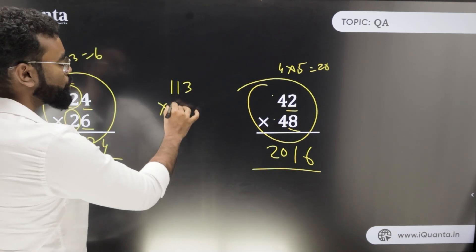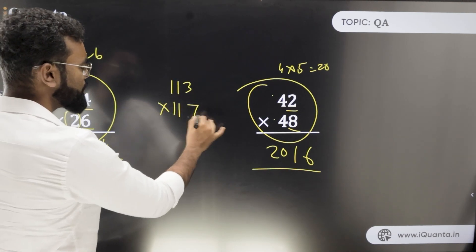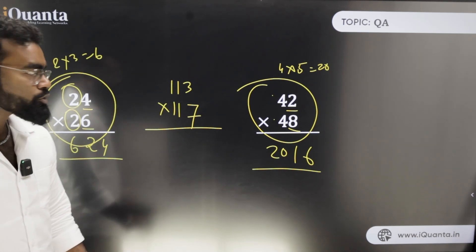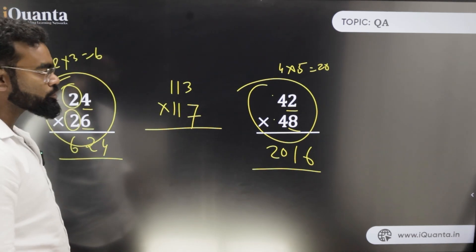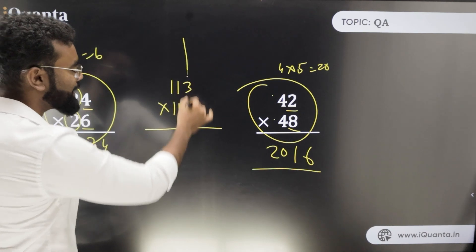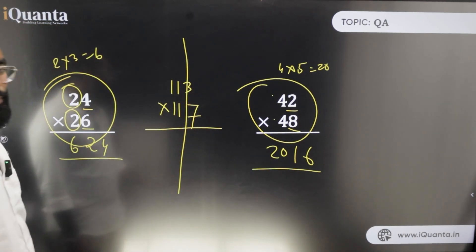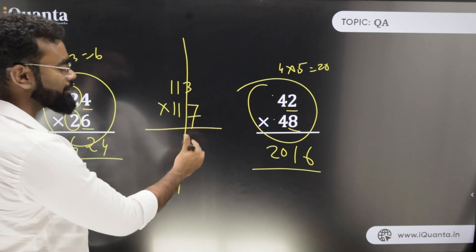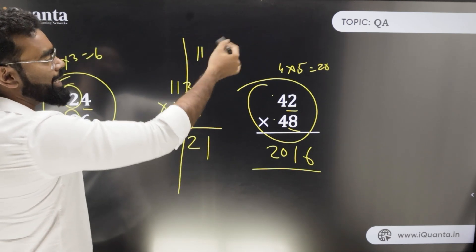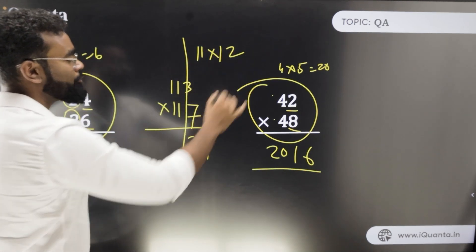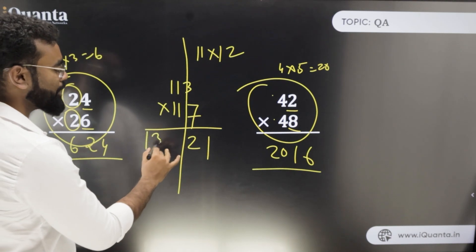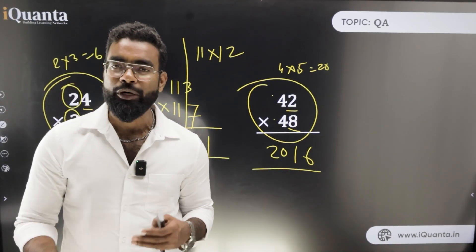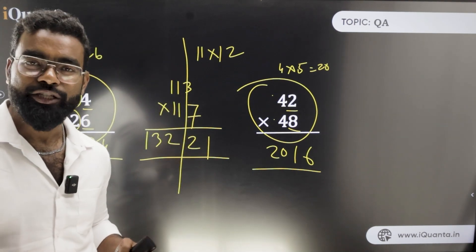We can extend this to three-digit numbers. Take 113 × 117. Split off the differing part: 3 and 7. The common part is 11. Units product: 3 × 7 = 21. Leading part: 11 × 12 = 132. So the answer is 13221.